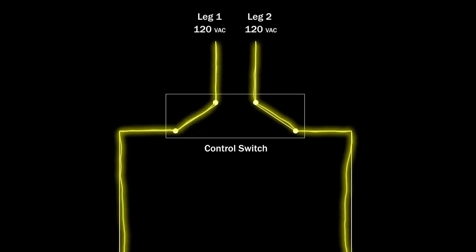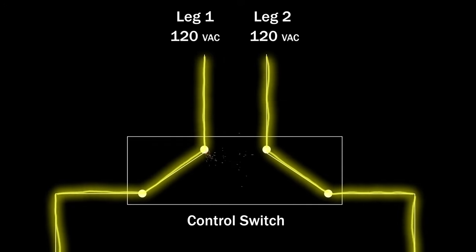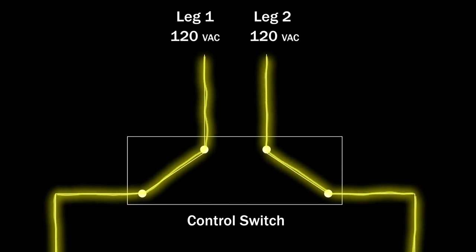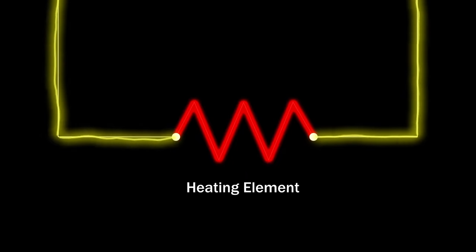However, the electrical contacts inside the switch can sometimes fuse together, causing the switch to send continuous voltage to the surface element.